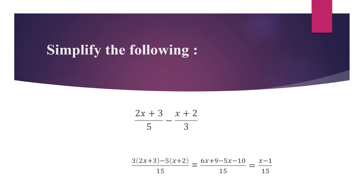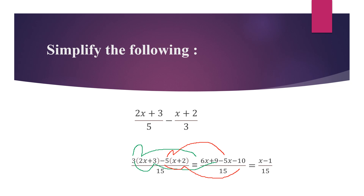The next step is to divide. 5 into 15 gives us 3, and 3 into 15 gives us 5. We bring down the minus sign in the middle and then multiply. We multiply 3 by 2x to get 6x, and 3 by 3 to get plus 9. Then we multiply minus 5 by x to get minus 5x, and minus 5 by plus 2 to get minus 10.